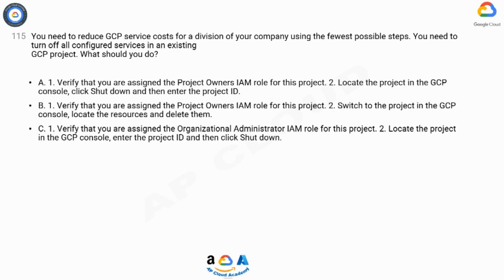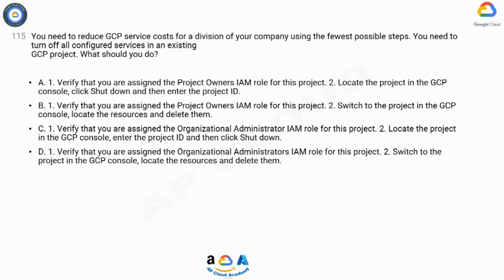A. 1. Verify that you are assigned the project owner's IAM role for this project. 2. Locate the project in the GCP console, click shut down and then enter the project ID.